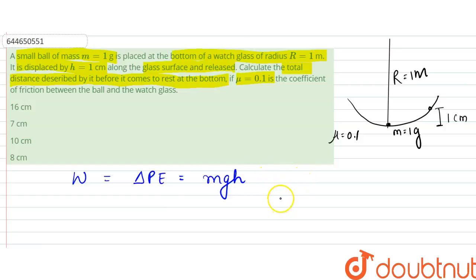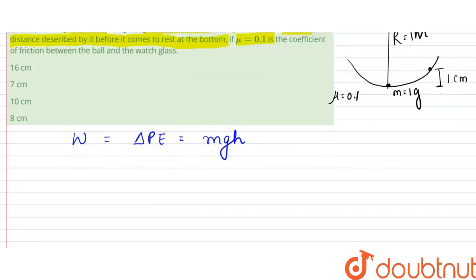So what we can write this to be equal to 1 gram, so it is 0.001 into g, that is 10 into... or we can keep everything in the SI unit itself. We will calculate this later on. First of all, we will use the components.